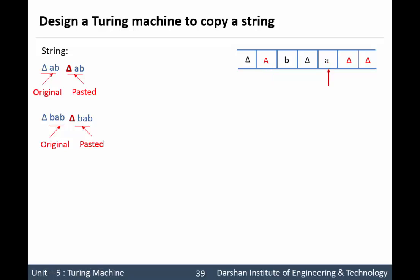Replace the blank symbol by small 'a'. Now come back to the left direction until you encounter the capital symbol. Now we have small 'b', so convert this small 'b' into capital 'B' and move to the right direction until you encounter the delta. Here is our delta, meaning it's the end of our original string. Now again we have to move to the right direction. Here is our first pasted 'a', so we bypass this small 'a', and after it we have the blank symbol. So we paste our small 'b' there.